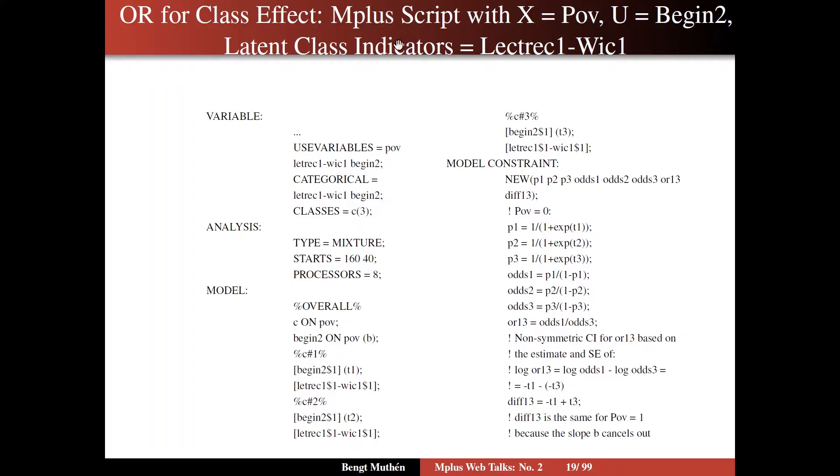We have the Mplus script here, X equals poverty, and U being the begin item from the reading data at wave 2. The latent class indicators are the five binary reading indicators, letter recognition and words in context from time 1. So we have time 1 indicators and corresponding latent class variable predicting a distal outcome at time 2.